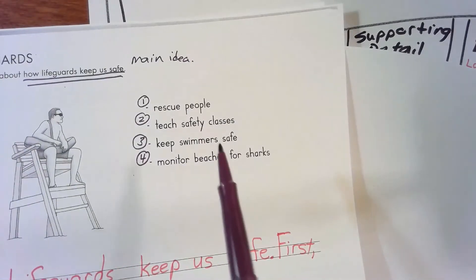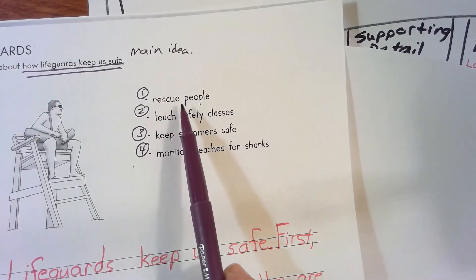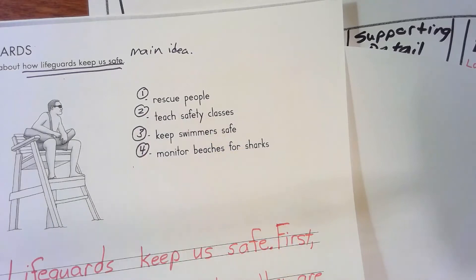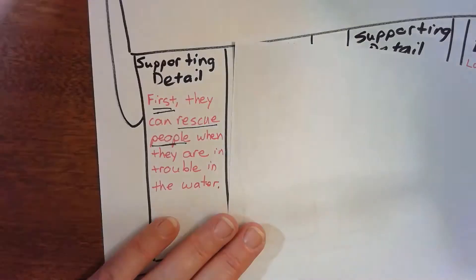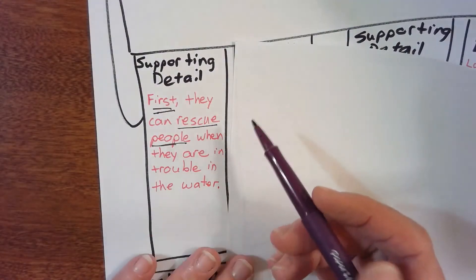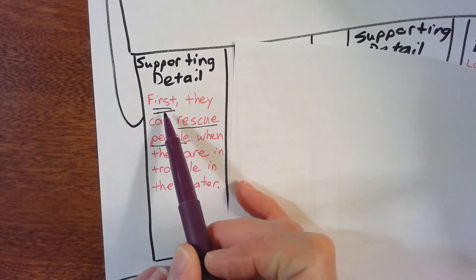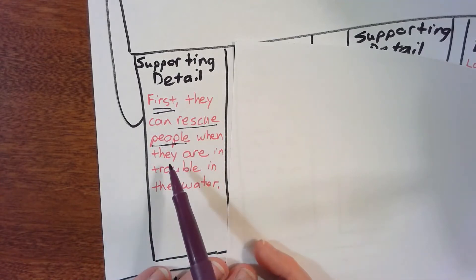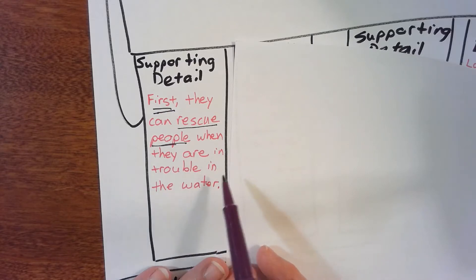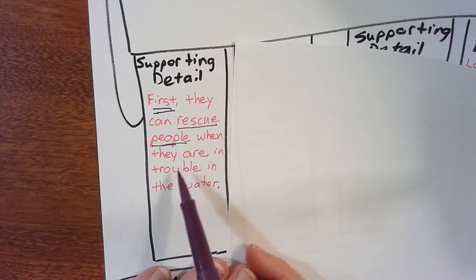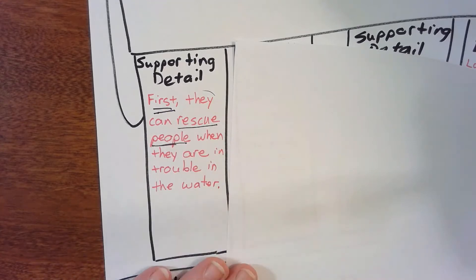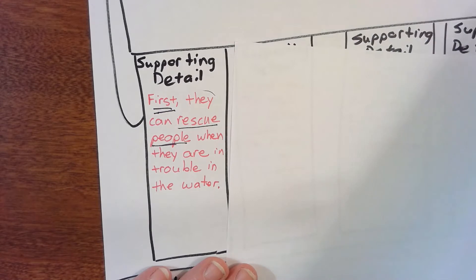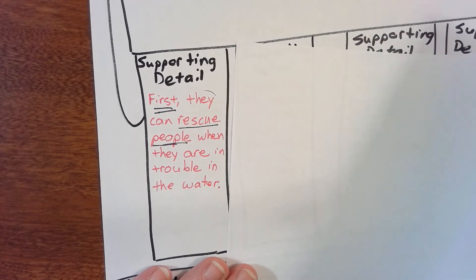The first detail they gave us is 'rescue people,' but we know that's not a complete sentence — we have to make it longer, give more details, and add a transition word. So: 'First, they can rescue people when they are in trouble in the water.' You have to fill in more words than what they give you — the two words they use is just a detail, just a fact.